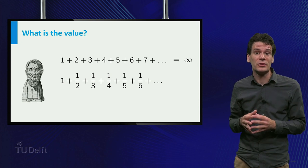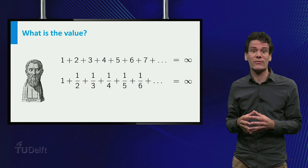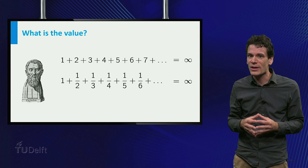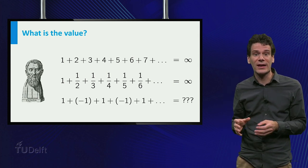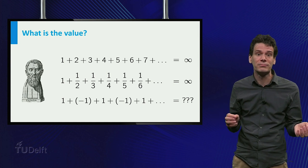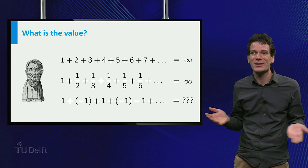The terms get smaller, but it turns out that this too grows infinitely large. And sometimes it is even more subtle. Think of the series with terms alternating between plus 1 and minus 1. It is not clear how to associate a value to this.